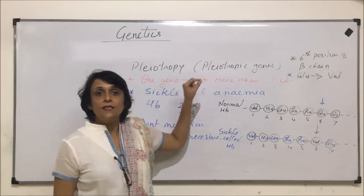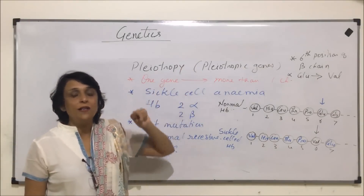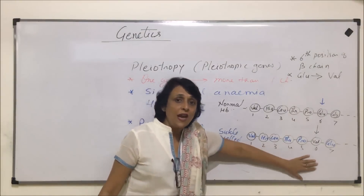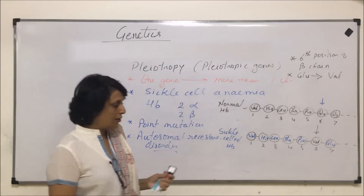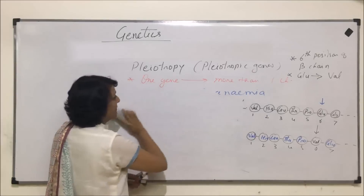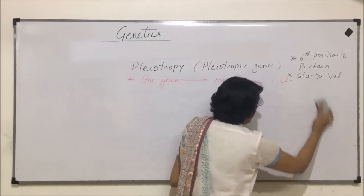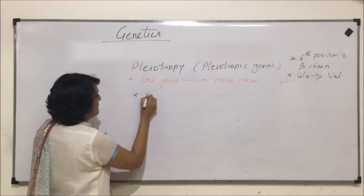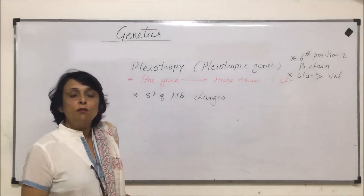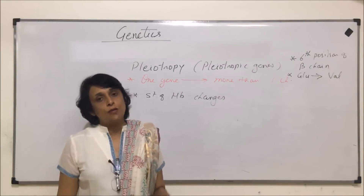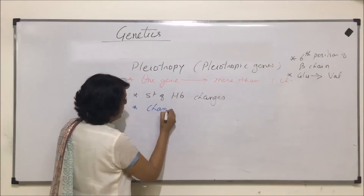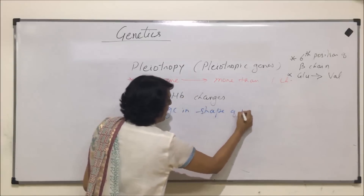Now, as we said, we are taking this example for understanding pleiotropy — one gene responsible for controlling more than one character. This mutation, whenever this change takes place, there are two changes which are seen. First, the structure of hemoglobin is altered — structure of hemoglobin changes — and because of which it is not able to carry the same number of oxygen molecules as normal hemoglobin. Second, there is a change in the shape of RBC.